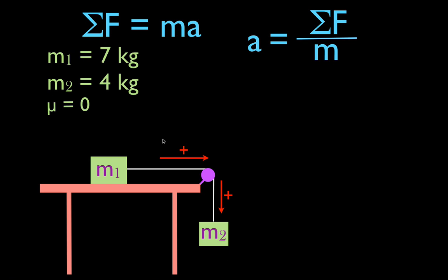Now we can draw in all the forces acting on both objects: the gravitational force for m1 (m1g) and the gravitational force for m2 (m2g). Each object is attached by the string, so there is a tension force acting on each object. The tension force on m2 points up in the negative direction (Ft), and the tension force on m1 pulls it to the right in the positive direction (Ft). The last force is the normal force, which points straight up, keeping m1 from falling through the table. The normal force Fn and m1g are equal in magnitude but opposite in direction.